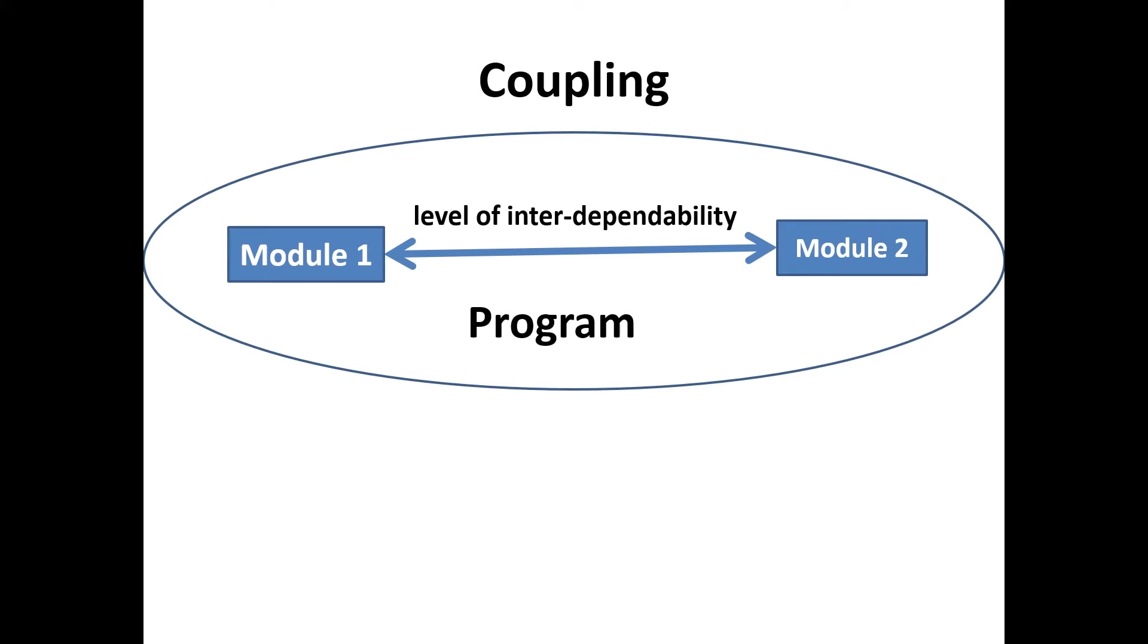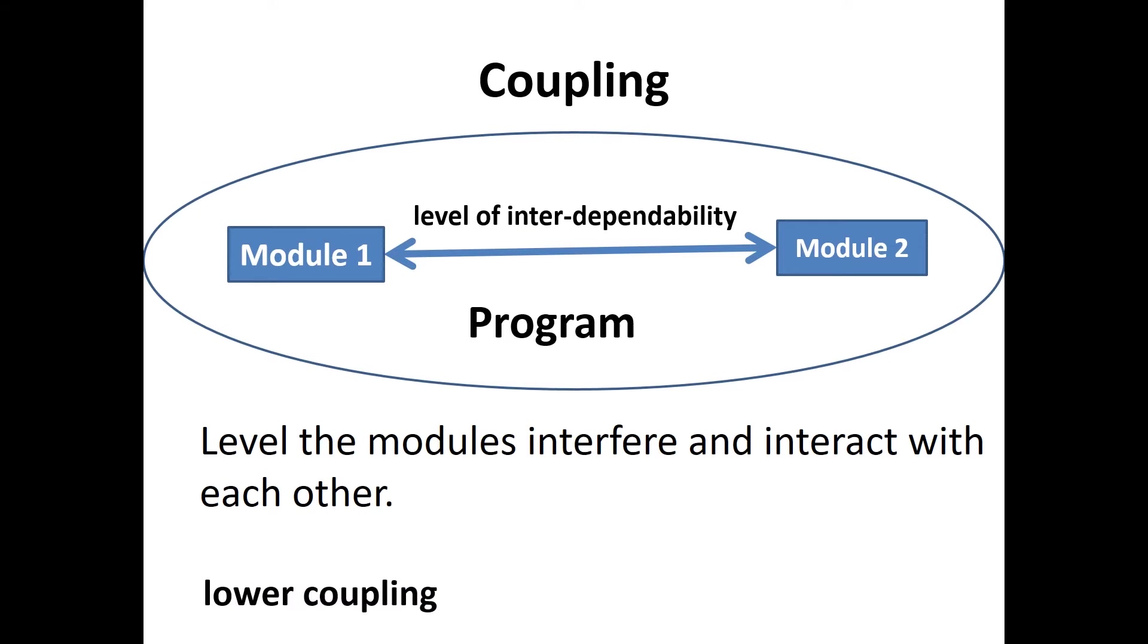Coupling. Coupling is a measure that defines the level of interdependability among modules of a program. It defines the level of the modules, how they interface and interact with each other. The lower the coupling, the better the program. There are five levels of coupling.